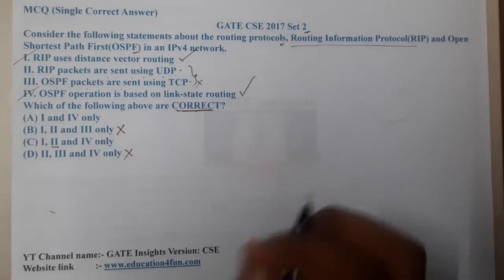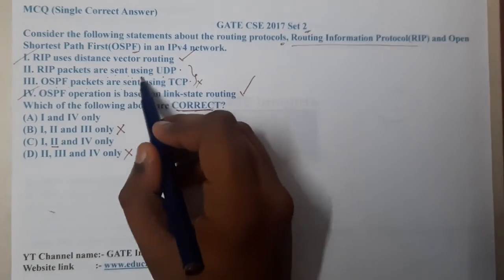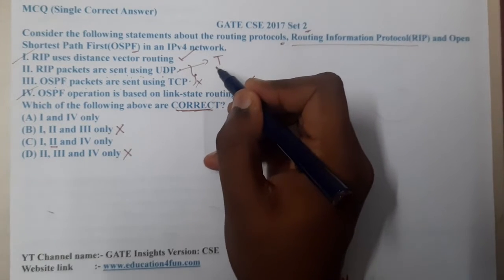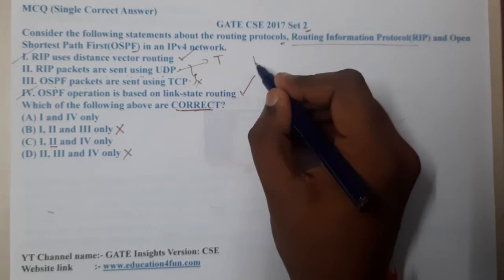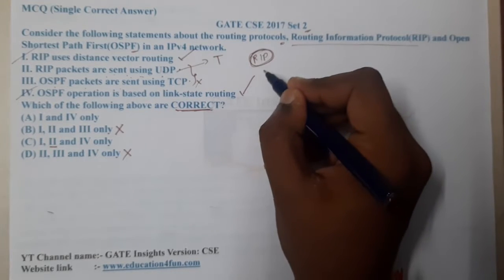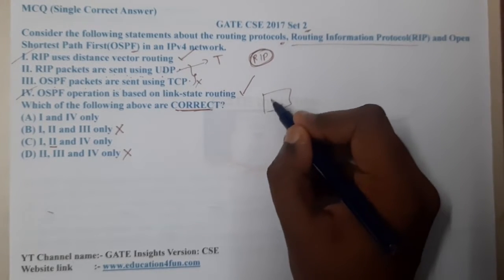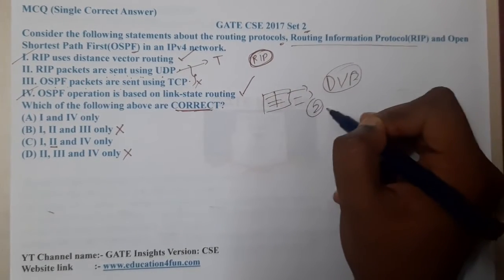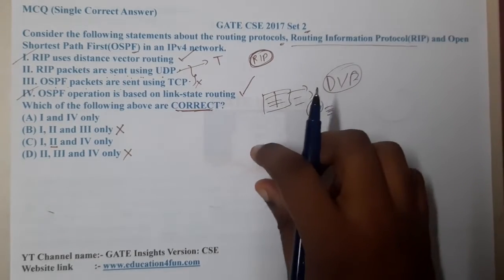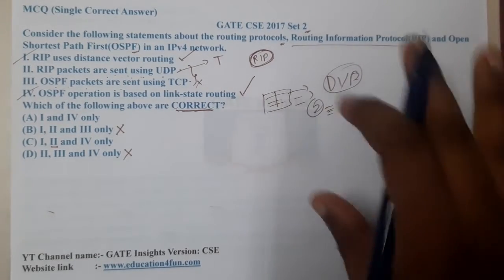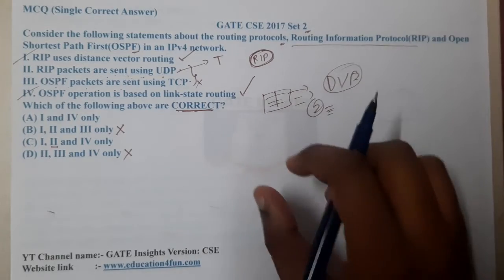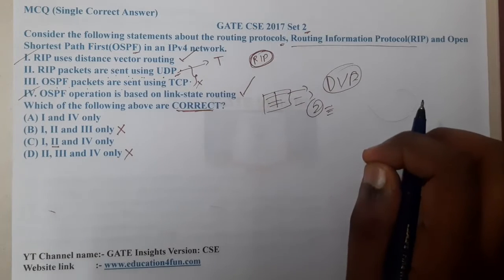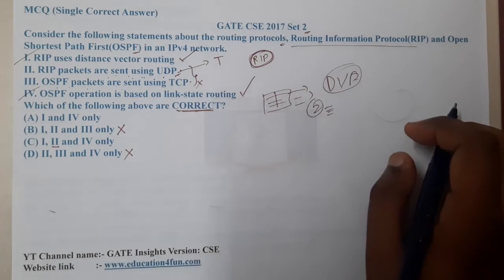Statement II — RIP packets are sent using UDP — is true. RIP packets are essentially the routing tables that are shared between routers. If you recall from distance vector routing, the second step is sharing your table with your neighbors. These tables are shared using UDP.